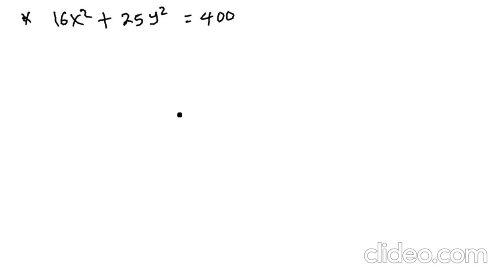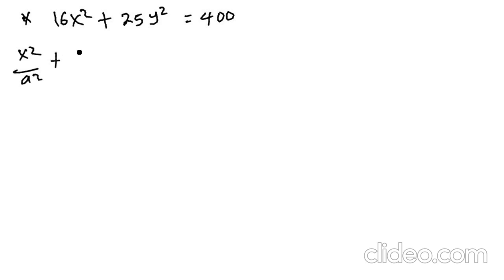Eccentricity: c over a equals 3 over 5. Now for the horizontal and vertical ellipse example: 16x squared plus 25y squared equals 400. We convert to standard ellipse form: x squared over a squared plus y squared over b squared equals 1. We are going to write the equation.